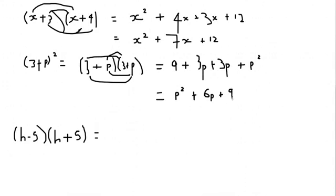This one is actually called the difference of two squares. You can work this out very easily just by looking at it, but we'll go the long-winded way first. So first, h squared. Second, you can do minus 5 times h, which is minus 5h.